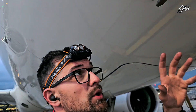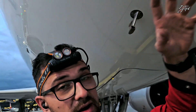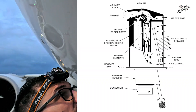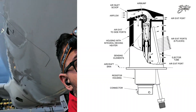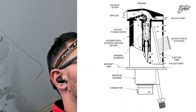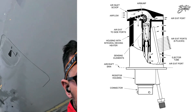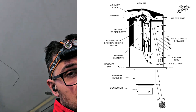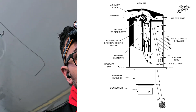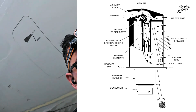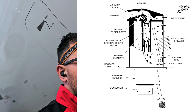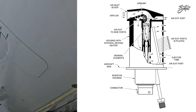How it works: air enters into the scope, then it goes through the calibrated choke, then it flows over a hermetically sealed platinum resistance sensing element, which sends data to the ADIRU — the air data inertial reference unit of the airplane — where everything is calculated.